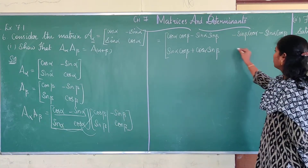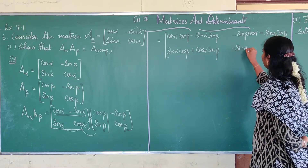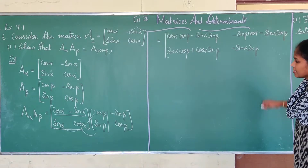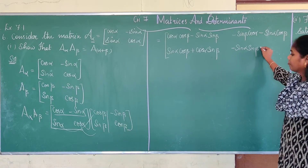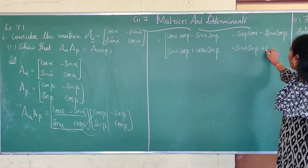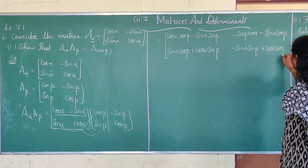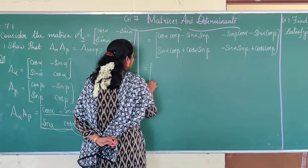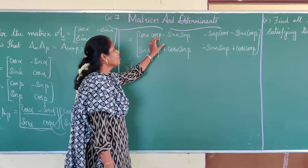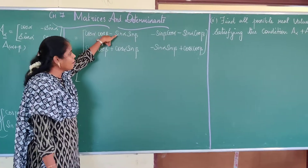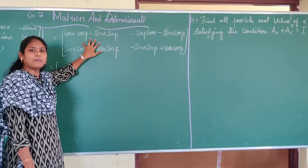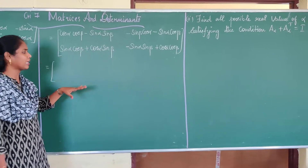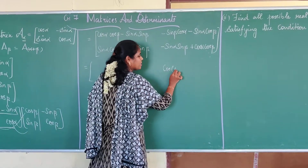For the second row: we get minus sin α · sin β, and then plus cos α · cos β. So this is nothing but — and you may be new to this formula — but you will learn these formulas in trigonometry. We call these formulas compound angle formulas. That is, cos(a + b).